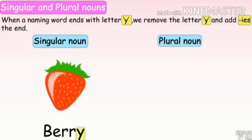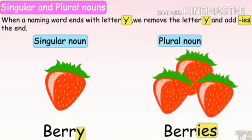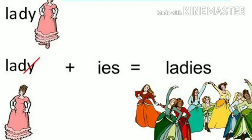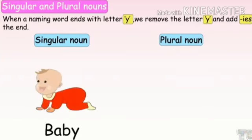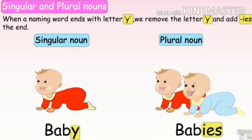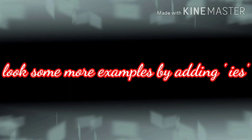Another example: baby — B-A-B-Y. Remove Y here and add IES. Singular noun changes to plural noun: baby/babies. Another example by adding IES: fly — you see Y here, so write flies. Body — B-O-D-Y. Remove Y and write IES — bodies.